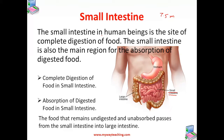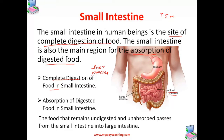The small intestine is also the site of complete digestion of food and also the absorption of digested food. The partially digested food from the stomach comes into the small intestine. The small intestine receives secretions of digestive juices from the liver and the pancreas — both liver and pancreas send their juices to the small intestine.